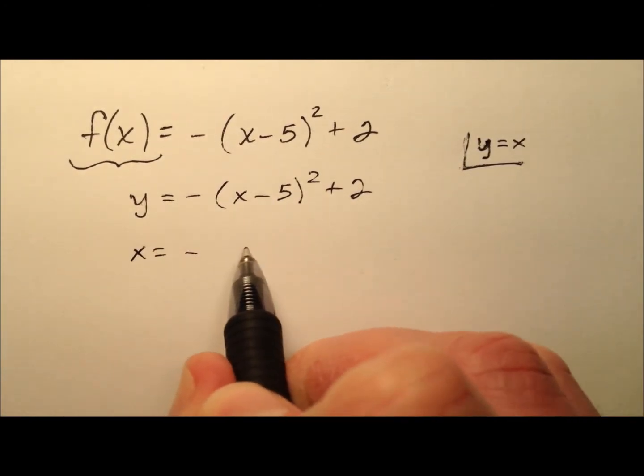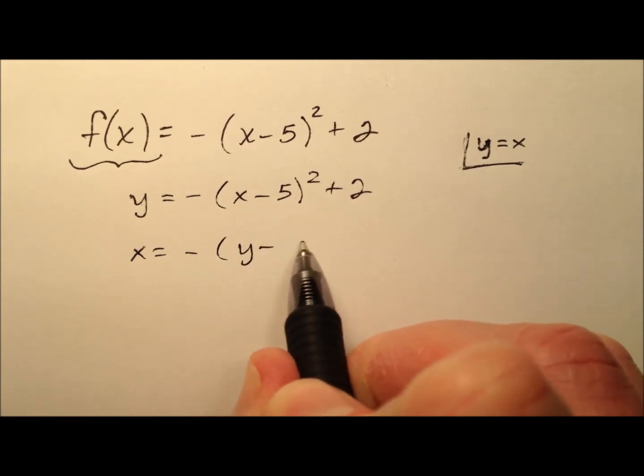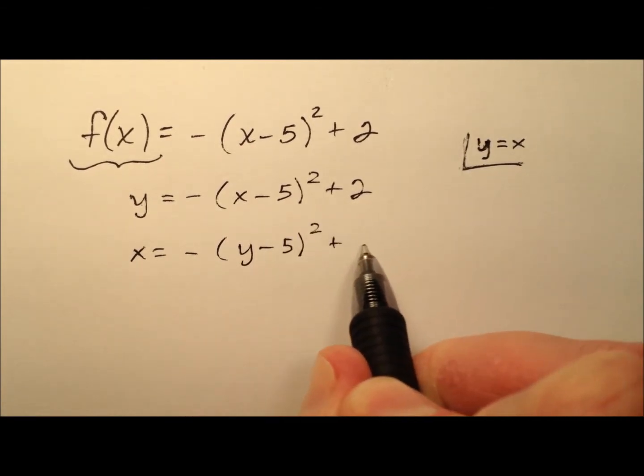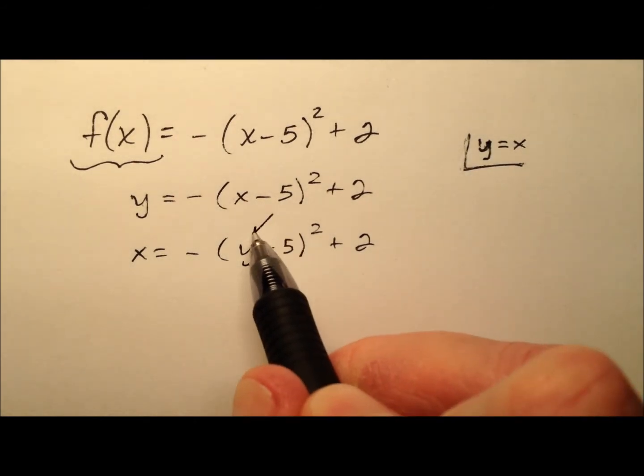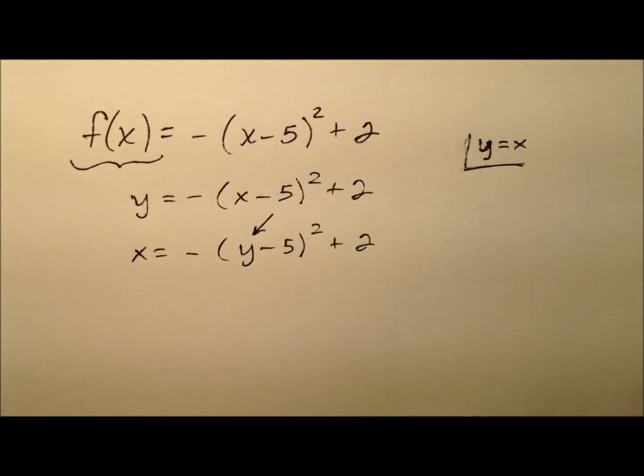So now we have x equals the opposite of, and then y minus 5 quantity squared plus 2. And so the next thing we'd like to do in finding this inverse function is go ahead and solve for this y.